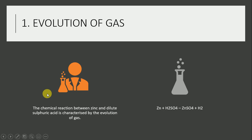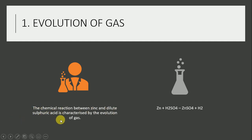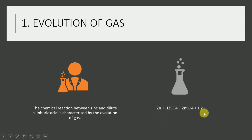Evolution of gas. When a chemical reaction occurs, gas may be produced. For example, the chemical reaction between zinc and dilute sulfuric acid shows the characteristic of evolution of gas. The reaction is: Zn + H2SO4 → ZnSO4 + H2. H2 is a gas — it will produce bubbles. These are our reactants and products.